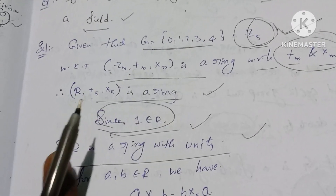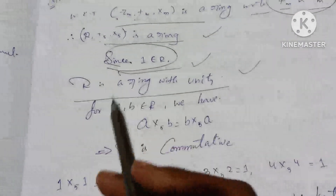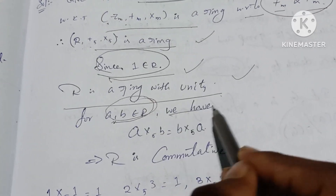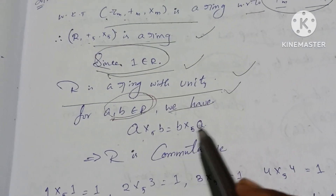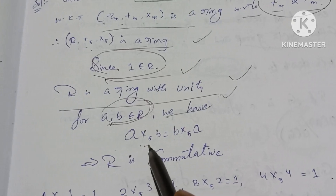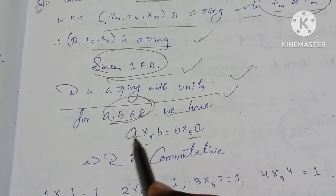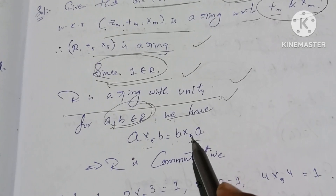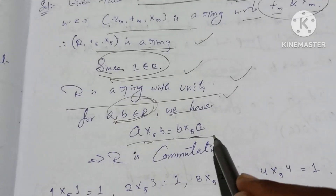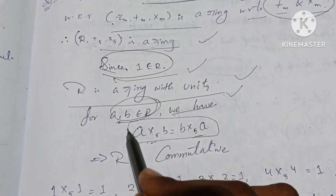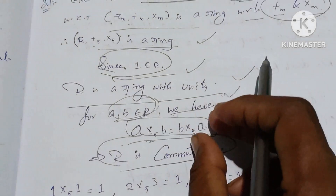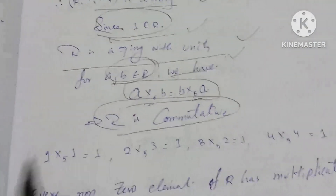We have a × b equal to b × a under multiplication modulo 5. So a ×5 b equals b ×5 a for all elements. This condition holds, so R is commutative.